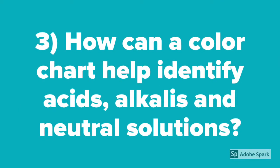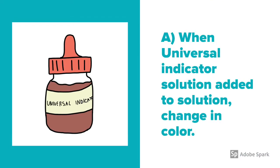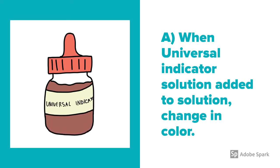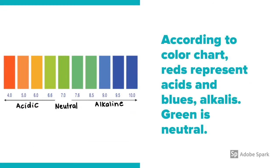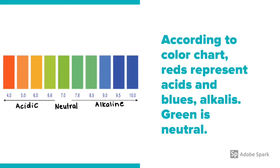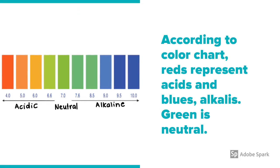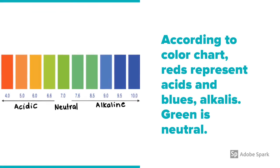Question number 3: How can a color chart help identify acids, alkalis, and neutral solutions? When universal indicator is added to the solution, it changes color. According to the color chart, reds represent acids and blues represent alkalis. Green is for neutral.